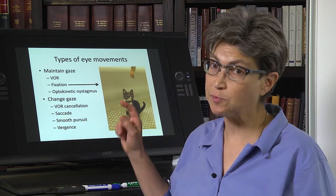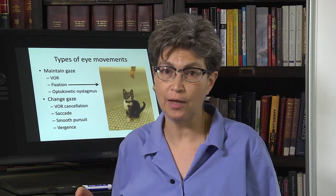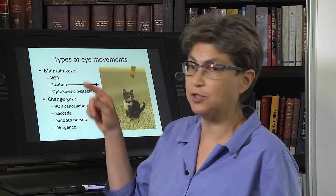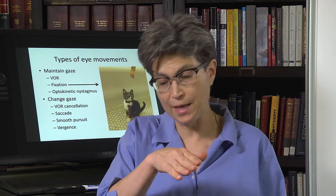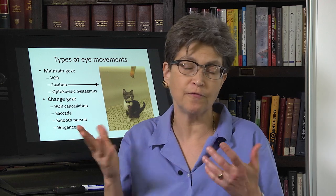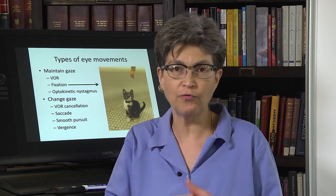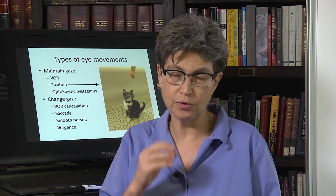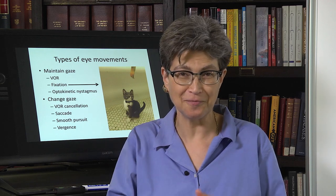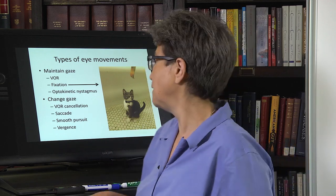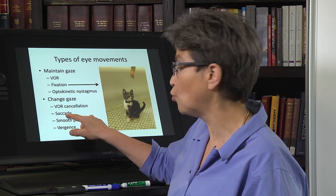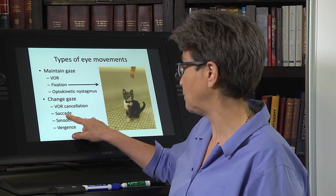A saccade — we're going to spend quite a bit of time on that. A saccade is a way that we move our fixation. We make a ballistic movement; it is a very fast movement on the order of 350 degrees per second. So it lasts a very short time because obviously you can't rotate your eyes very far. A saccade is a very important type of eye movement.